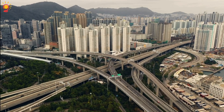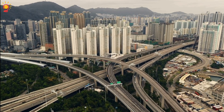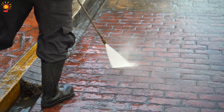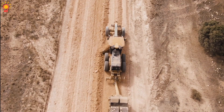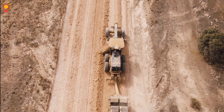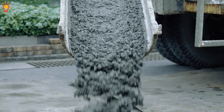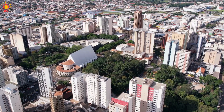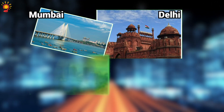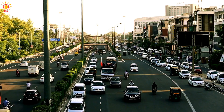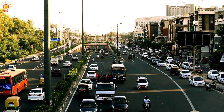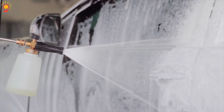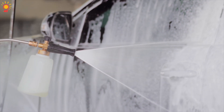Rapid urbanization has led to continuous construction work with little enforcement of dust control measures. Unpaved roads, debris piles, and cement dust contribute heavily to the problem in cities like Delhi, Mumbai, Bengaluru, and Hyderabad. Lack of green cover in urban areas means there are no natural dust traps, worsening the issue.